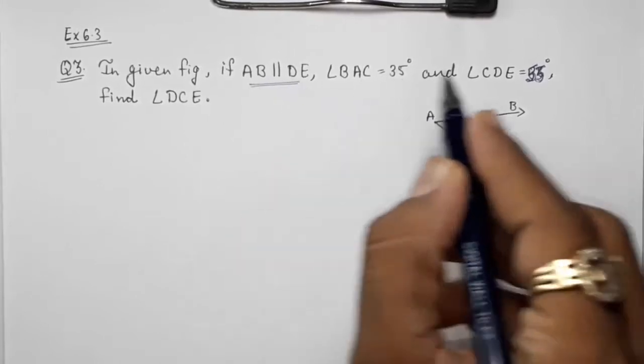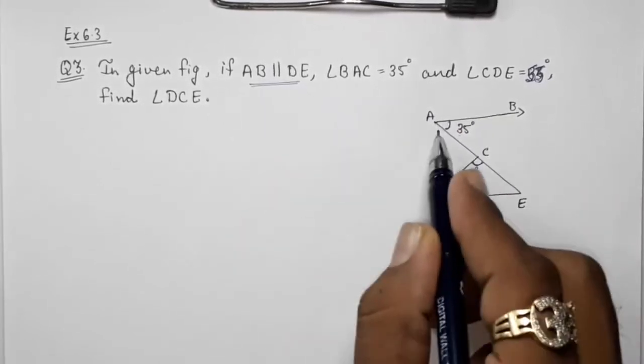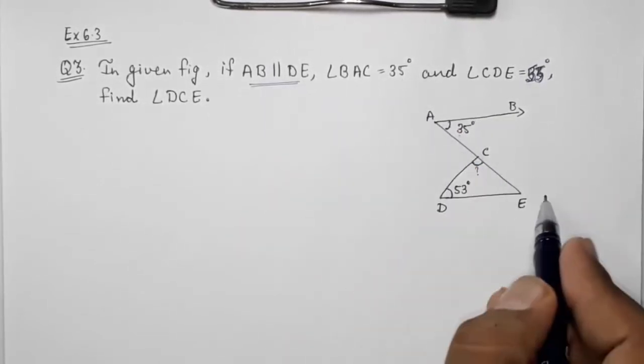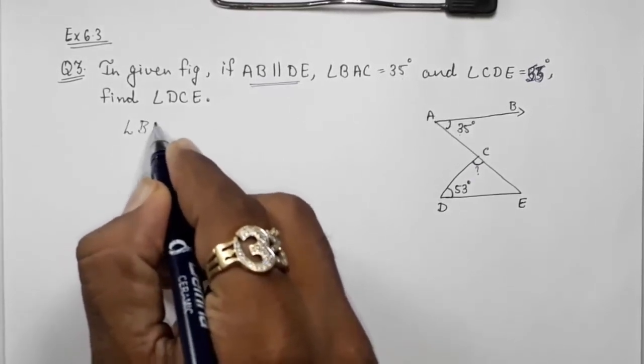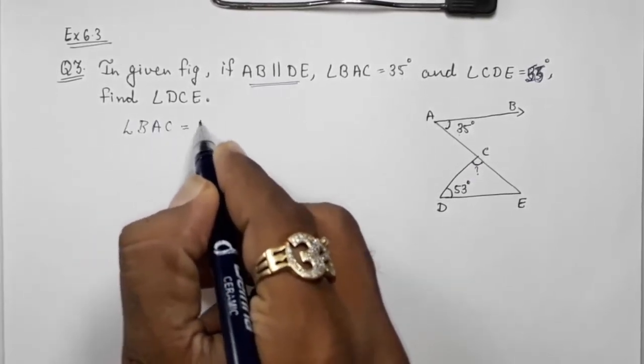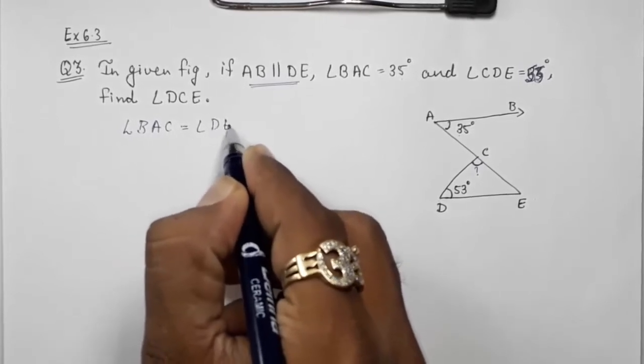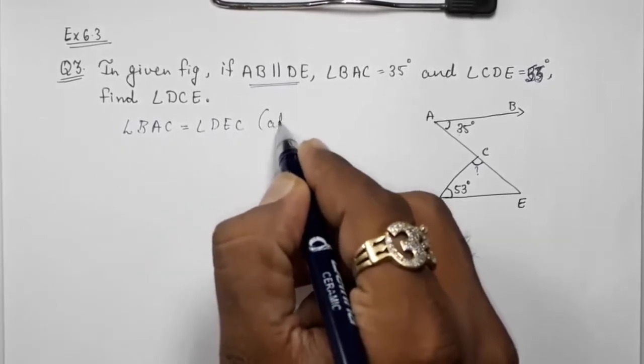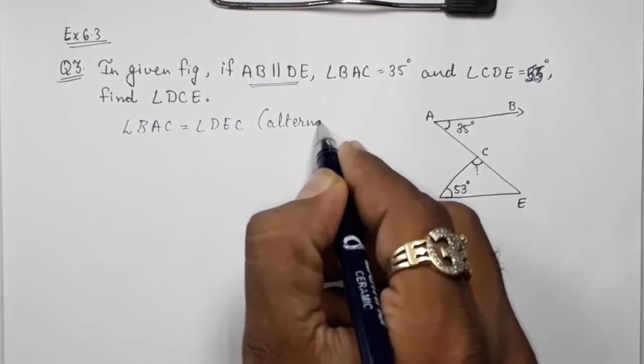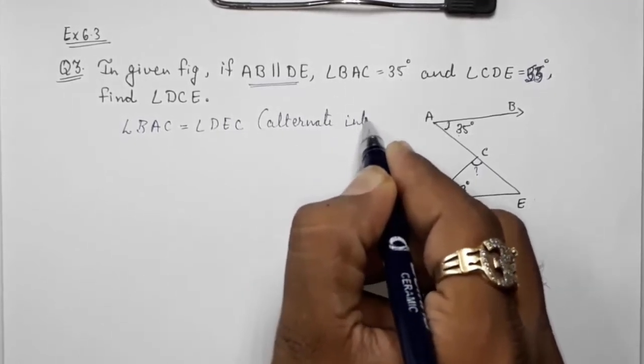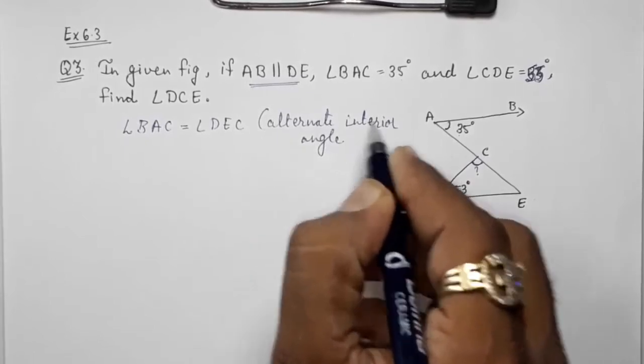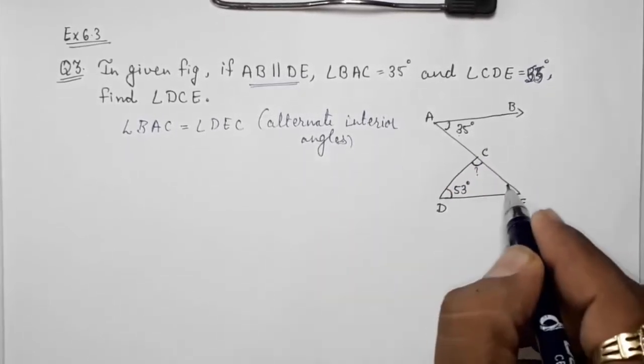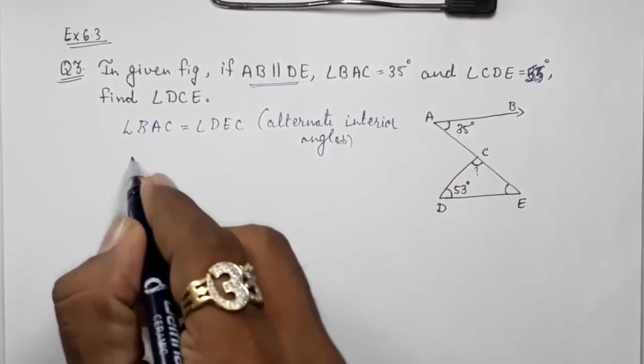Look here, they told that AB is parallel to DE and AC is the transversal. So directly we can write down angle BAC is equal to angle DEC by alternate interior angles. If both are equal, this will be also 35 degrees.